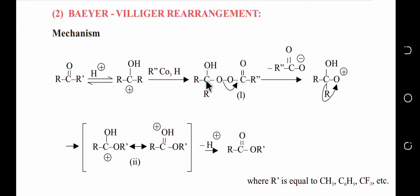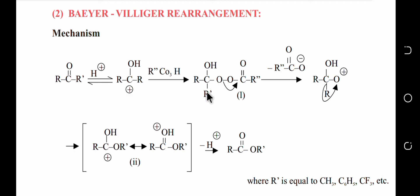The terminal oxygen of the peroxy acid — which was attached to hydrogen — attacks the carbocation carbon. This oxygen bonds to the carbon, and the peroxy oxygen chain remains attached. The oxygen carries a negative charge because one proton was removed, and the carbon had a positive charge, so they bond to each other.